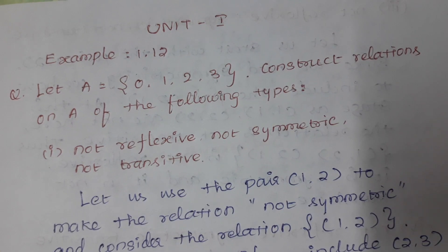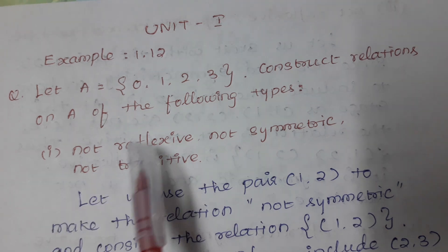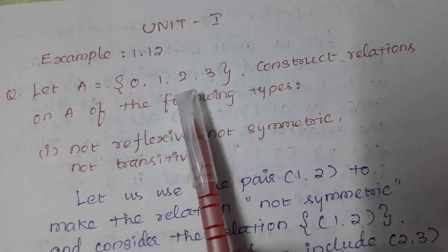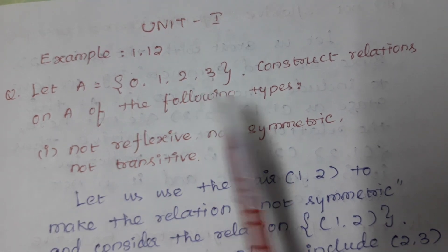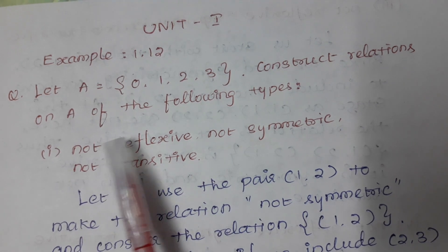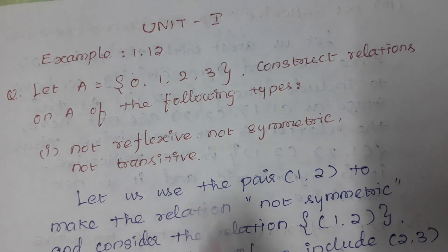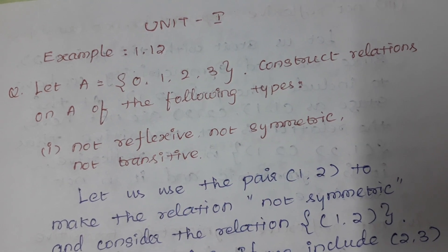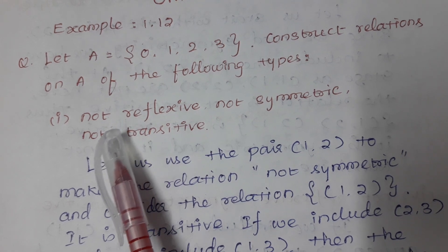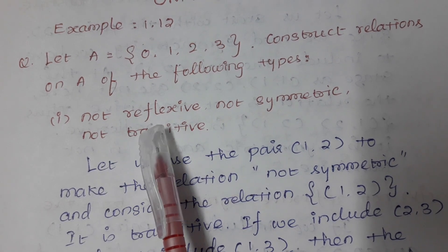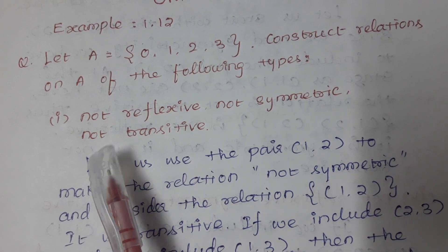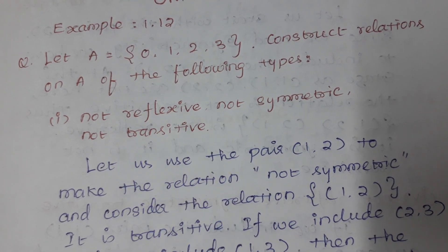What is given? Let A = {0, 1, 2, 3}. Construct the relations on A of the following types. First type: the relation is not reflexive, not symmetric, not transitive.